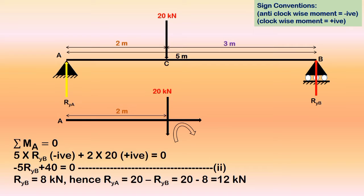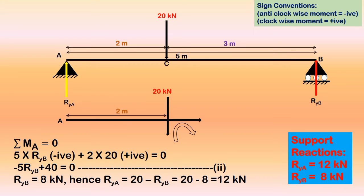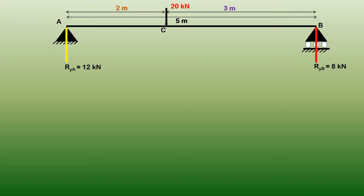With two equations and two unknowns, RyA and RyB can be easily solved. The support reaction RyA = 12 kN and RyB = 8 kN. This is the preliminary information we need to draw the shear force diagram.